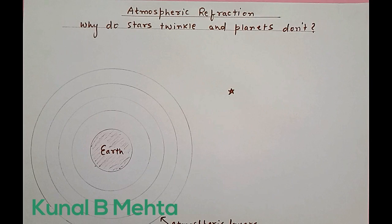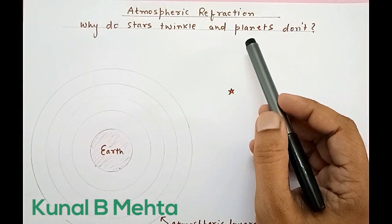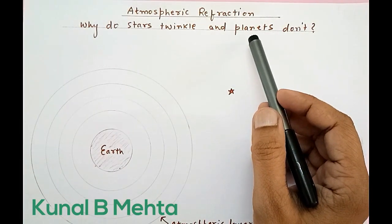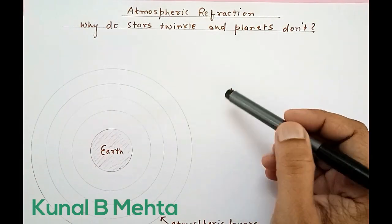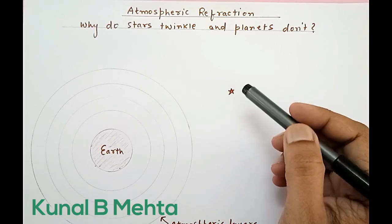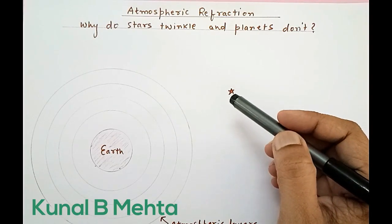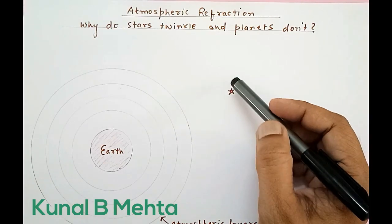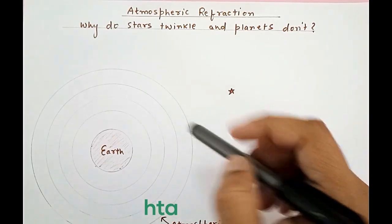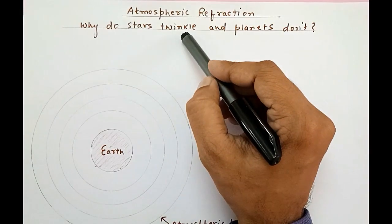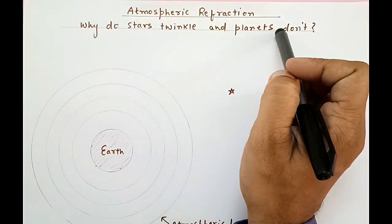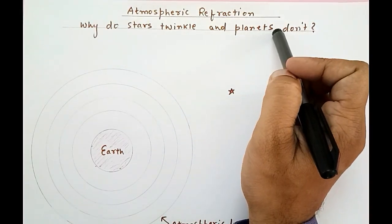Hello everyone. Today we are going to discuss about the effects of refraction in the atmosphere. We will be discussing about the real and apparent position of the stars, and we will also understand why stars twinkle and why planets don't.